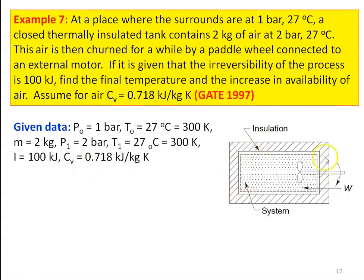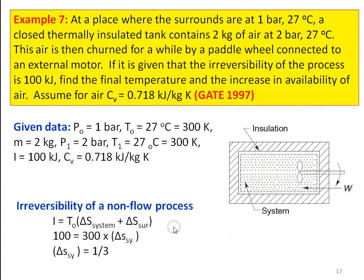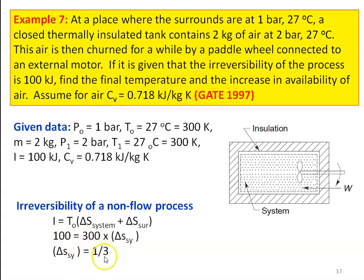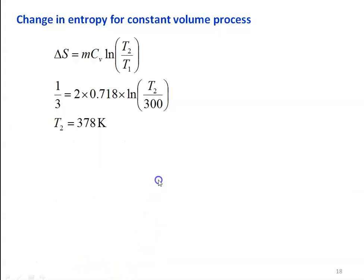For insulated chamber, delta S_surrounding = 0, so I = T0·ΔS_system. Thus 100 = 300×ΔS_system, giving ΔS_system = 1/3 kJ/K. For constant volume process: ΔS = M·Cv·ln(T2/T1), so 1/3 = 2×0.718×ln(T2/300). Solving, T2 = 378 K.